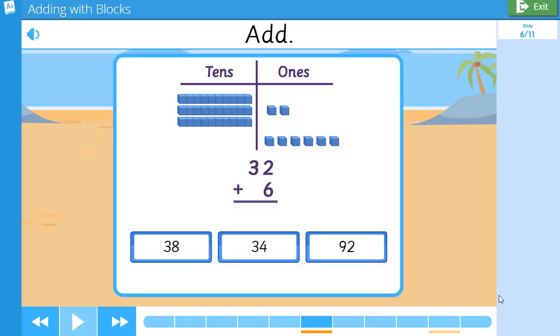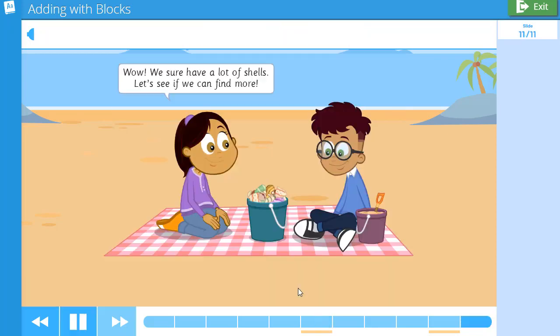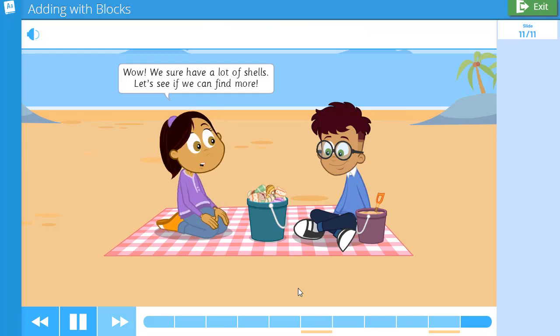Add. Nice. 32 plus 6 equals 38. Wow! We sure have a lot of shells. Let's see if we can find more.